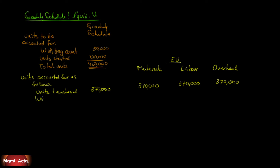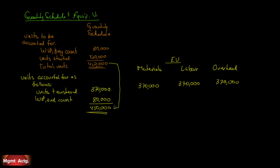Then we have work in process ending count. This number — 450,000 — must total the total down here. So if units transferred is 370, this must be 80. And we are told that it is 80,000. So that is 450,000 units, which equals our units to be accounted for. We know we're okay there.